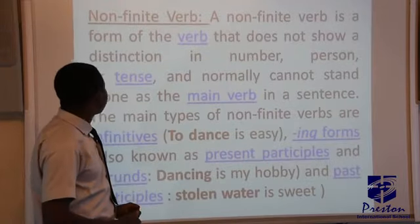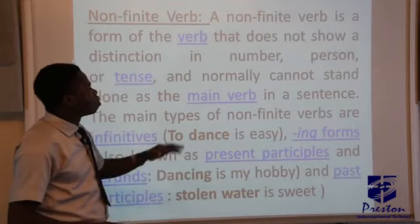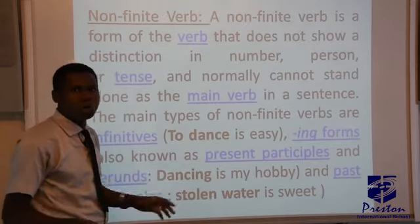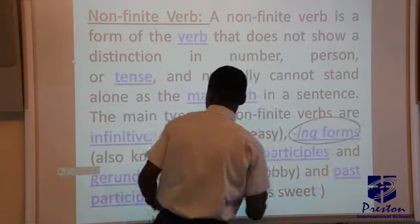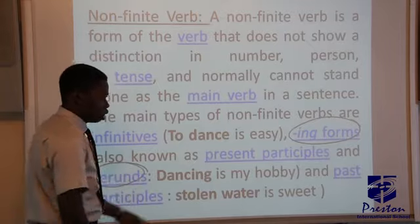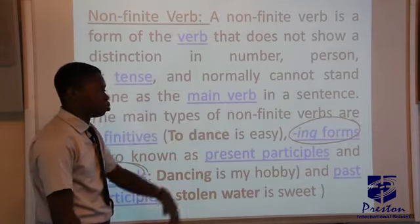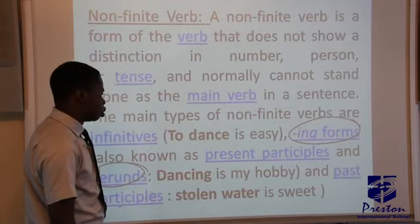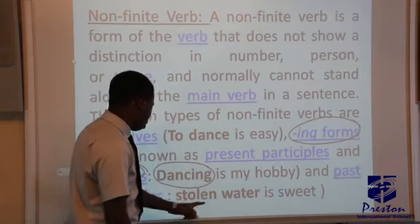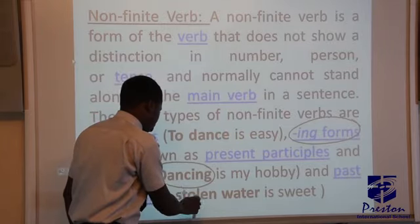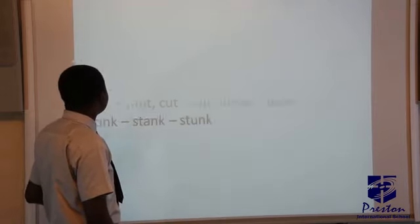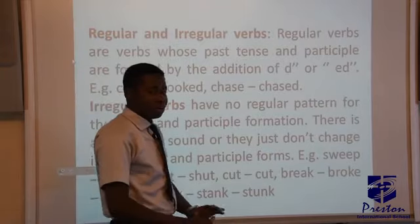Now the non-finite verb is a form of verb that does not show a distinction in number, person, or tense. Non-finite verbs come in the '-ing' form as present participles, and can also function as gerunds or past participles. For example, 'Dancing is my hobby' — here 'dancing' is a non-finite verb. Another example: 'Stolen water is sweet' — 'stolen' is also a non-finite verb.